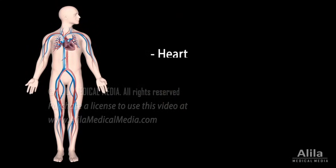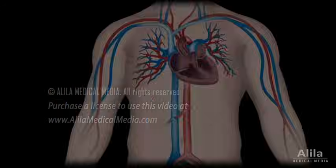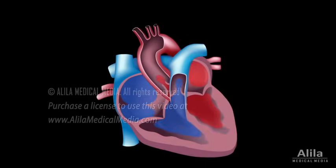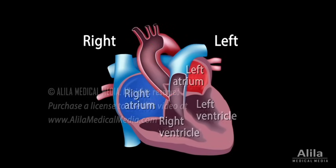The cardiovascular system consists of the heart, blood, and blood vessels. The heart is essentially a pump that moves blood through the vessels. It has two sides, each of which has two chambers.